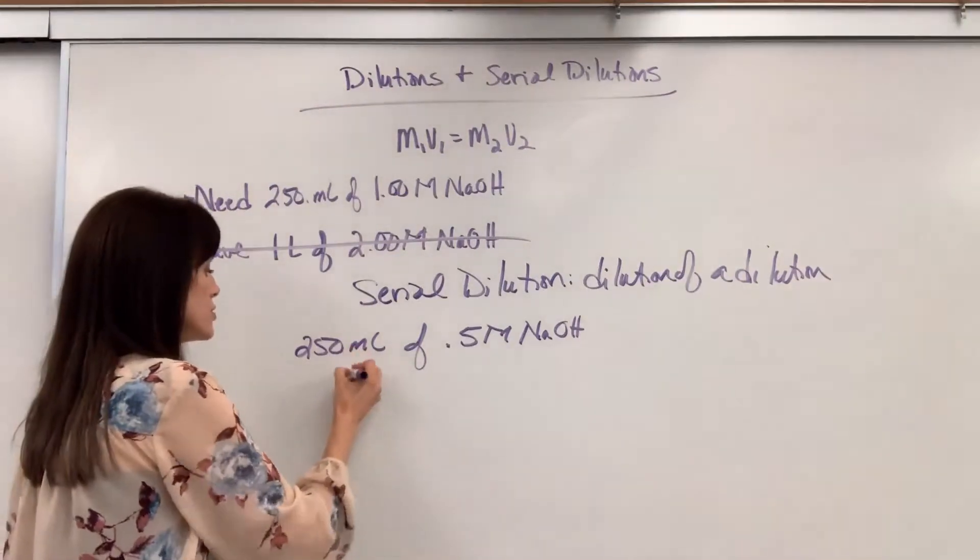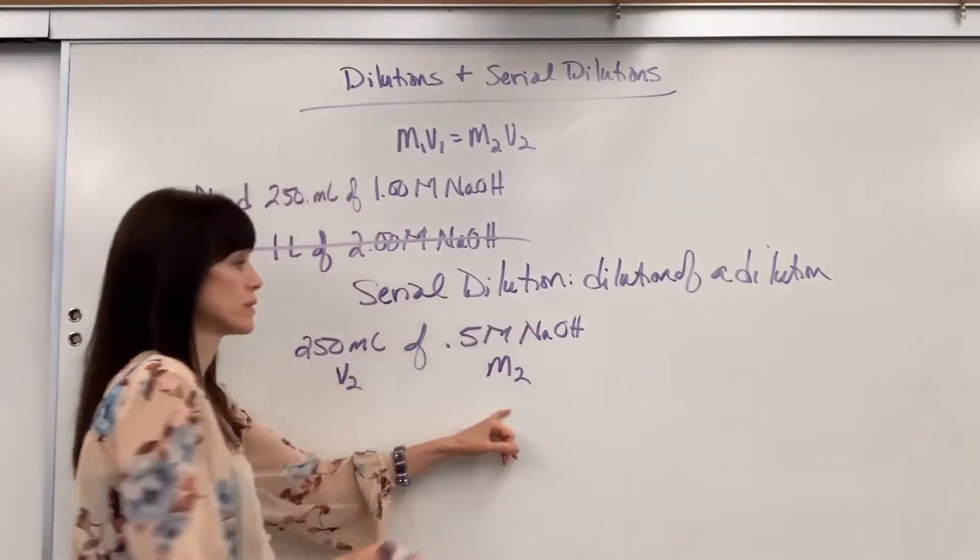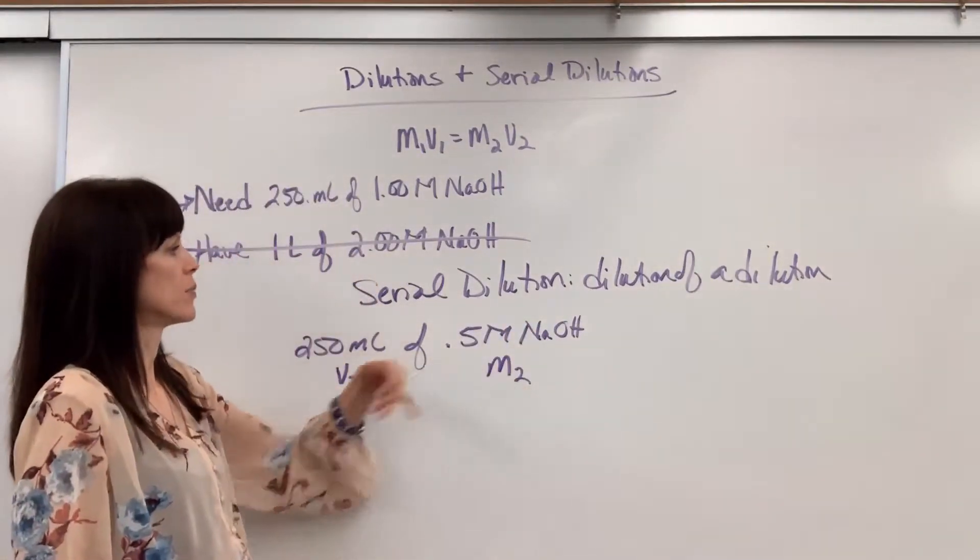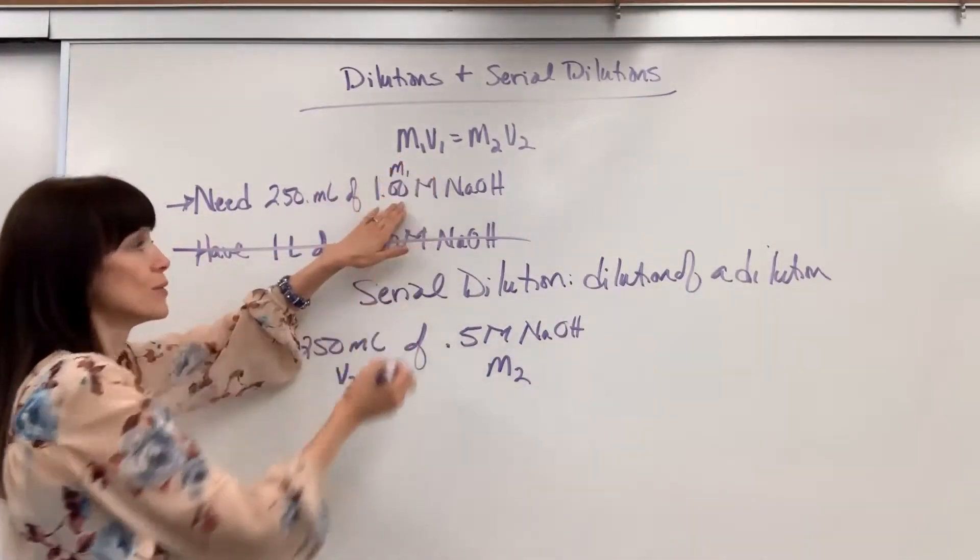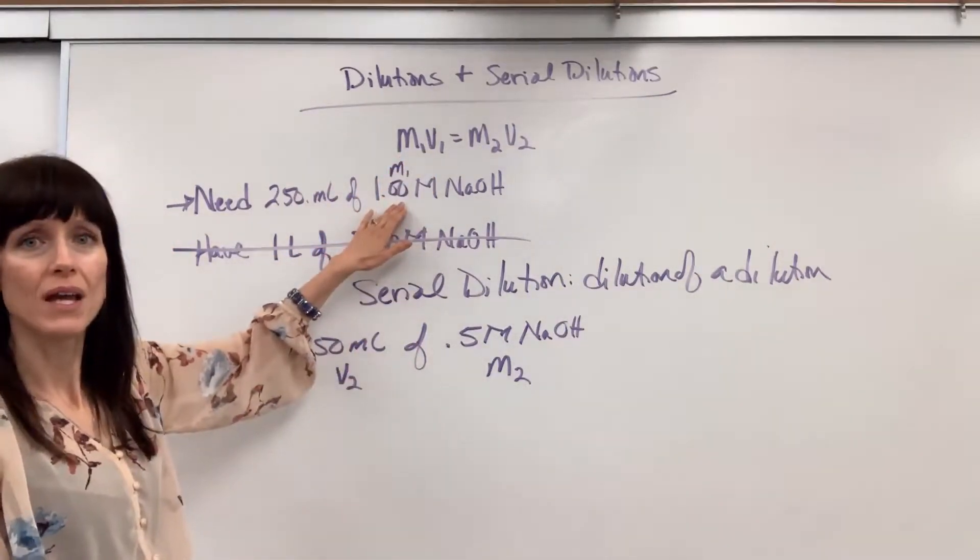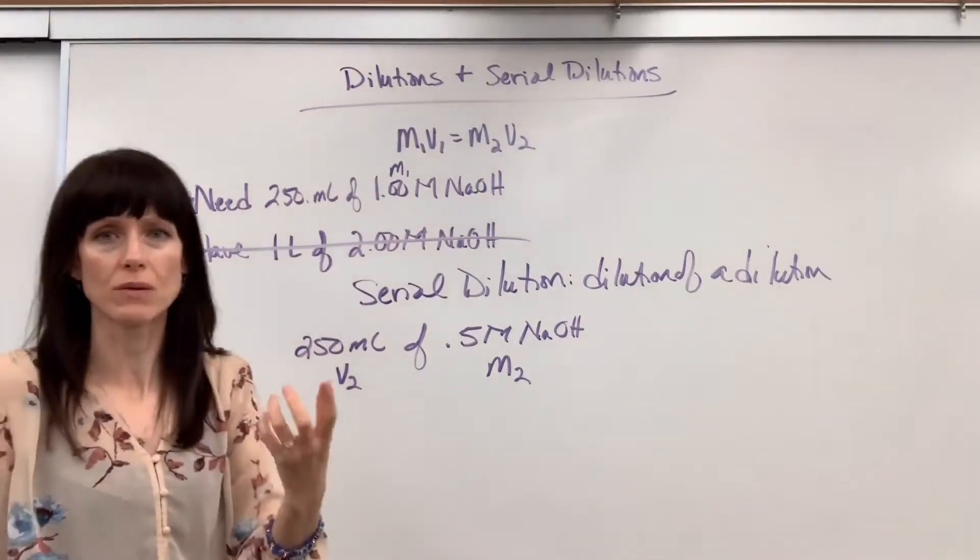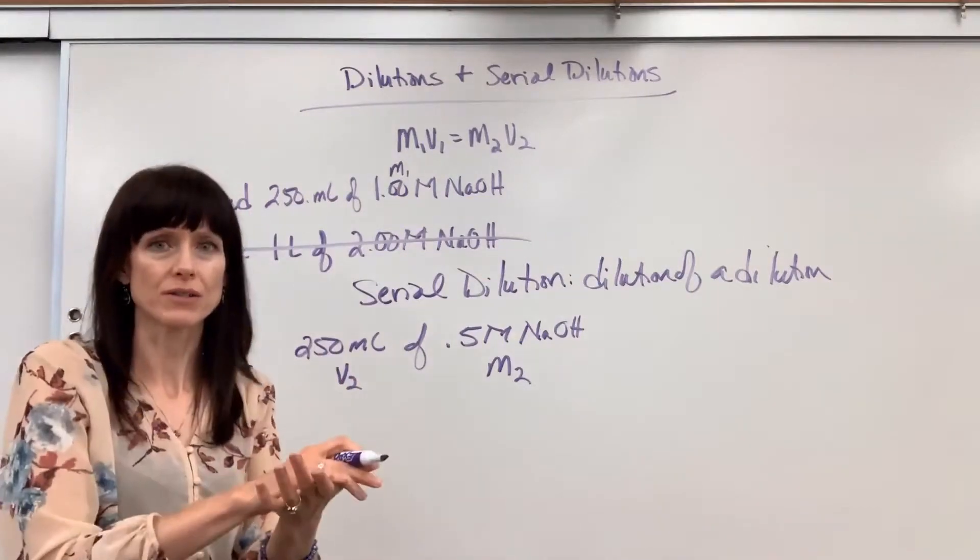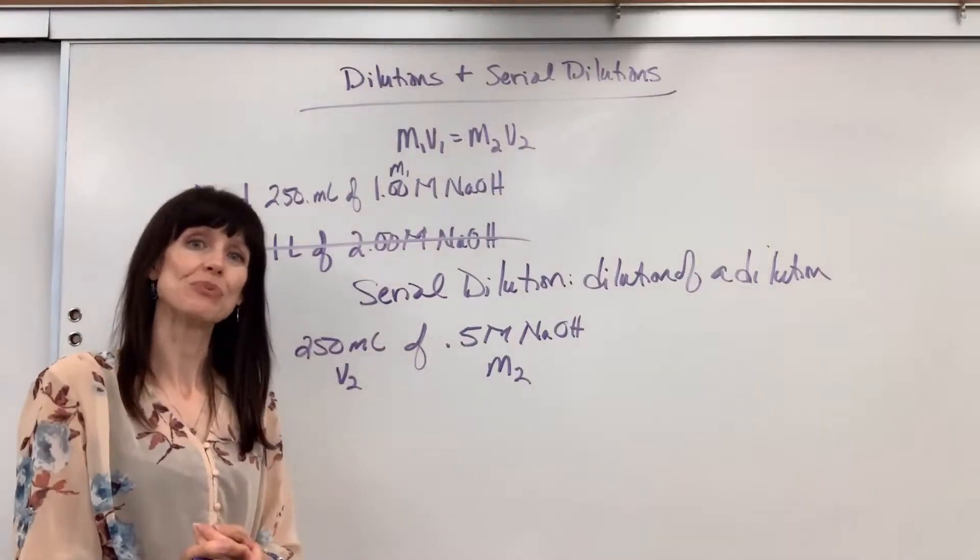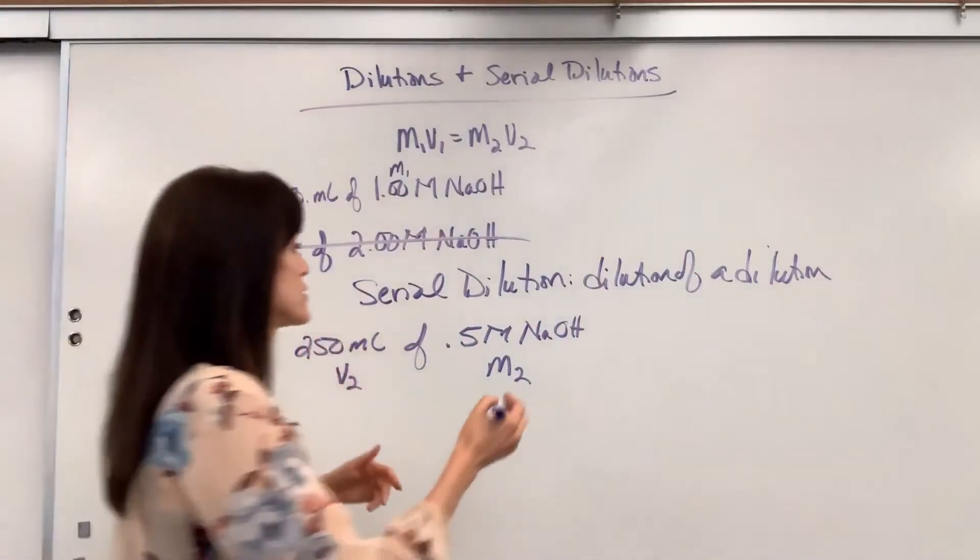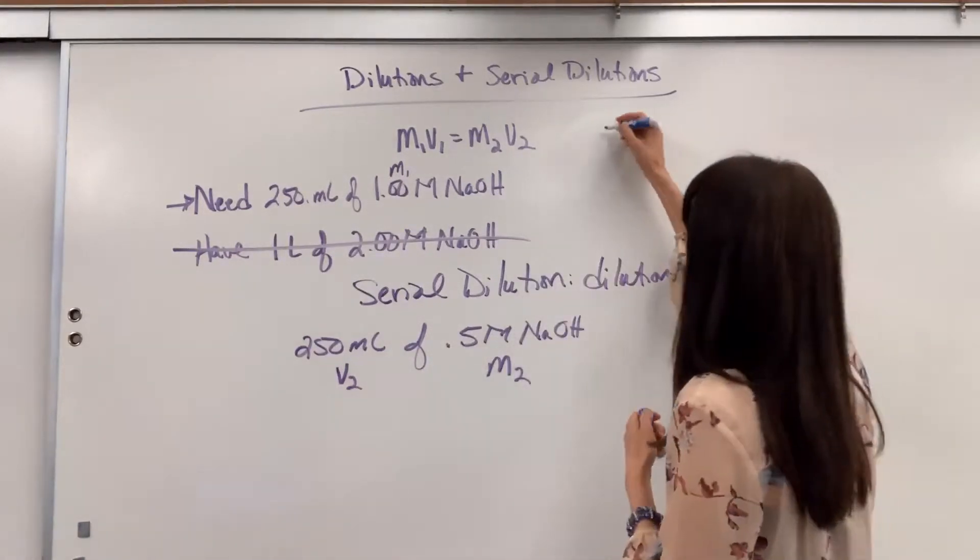My V2. I want to end with 250 mils. I want to end M2 with a molarity of 0.5. This up here would become my new molarity, my M1. And the question is, how much do I need of that? What volume do I need of that one molar that when I add water to it, up to a final volume of 250 mils, it gives me a final concentration of 0.5.